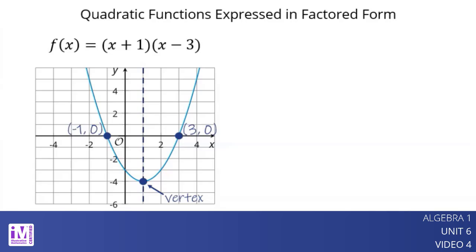Once we know the x-coordinate of the vertex is 1, we can find the y-coordinate by evaluating the function there. f of 1 is negative 4, so the vertex is at 1, negative 4.